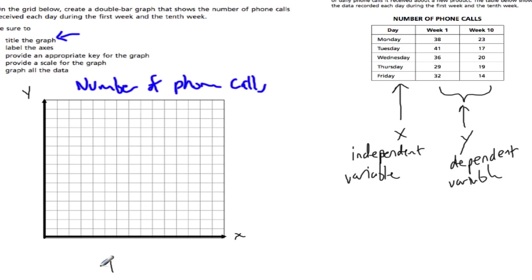But we're not going to write independent and dependent. We're going to write what these things are. Be more specific. It's the day of the week on the x-axis, and this is the number of calls on the y-axis. So number of calls.